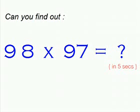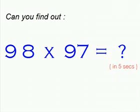Alright, so here goes another easycal trick for you. Can you find out what is 98 times 97 in 5 seconds? Okay, so your time starts now. I think the time is up. The answer is 9506.